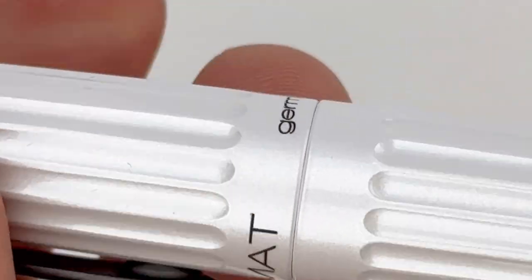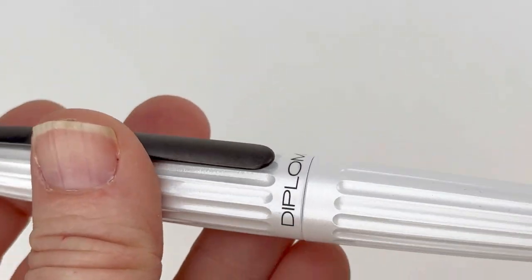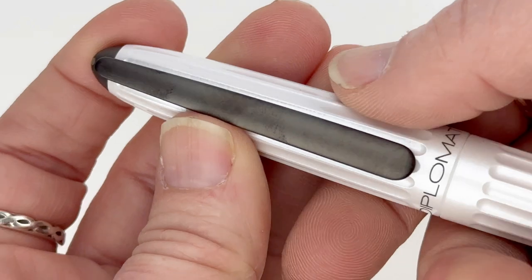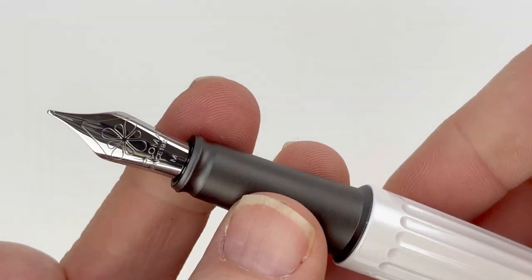This German-made pen has all the smooth lines and a streamlined body. You've got the Diplomat branding across the front of the cap and then the Germany on the back because this is a German-made pen.